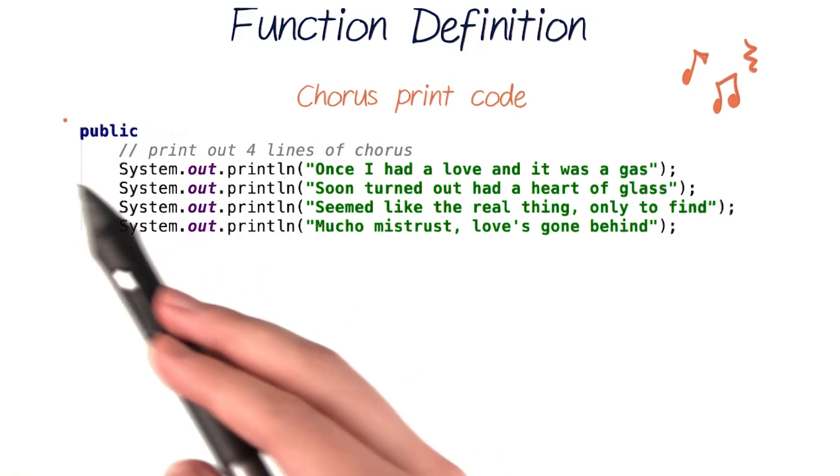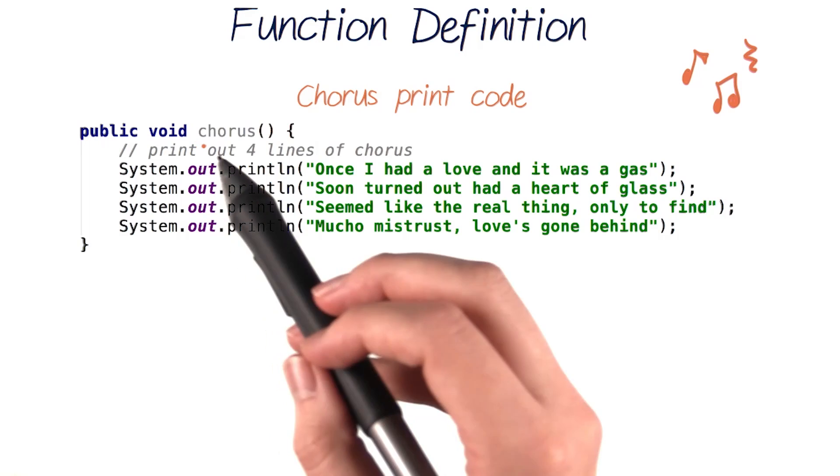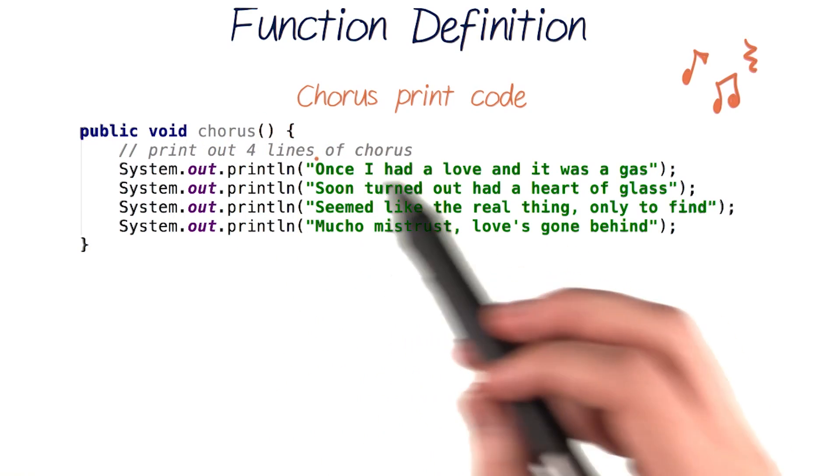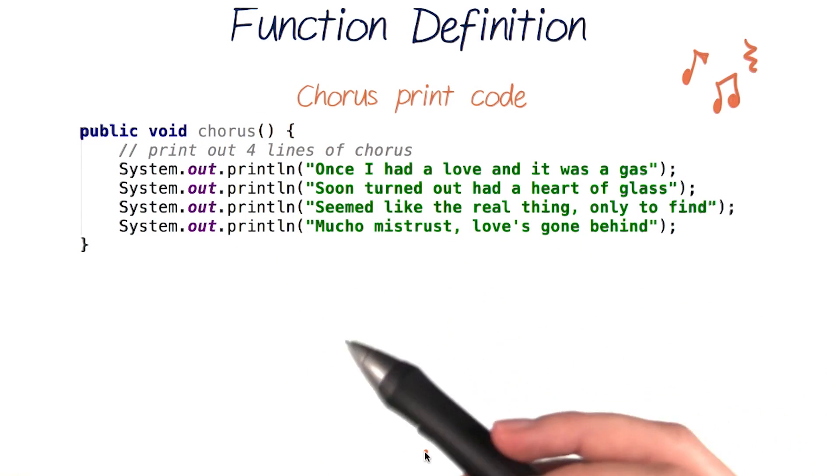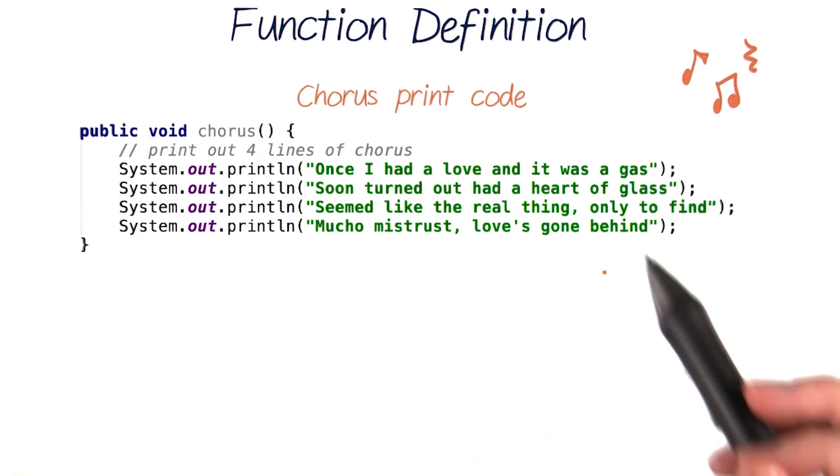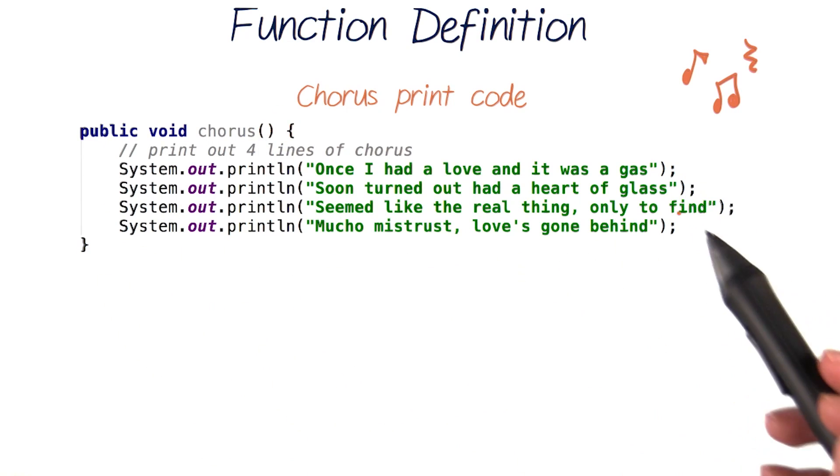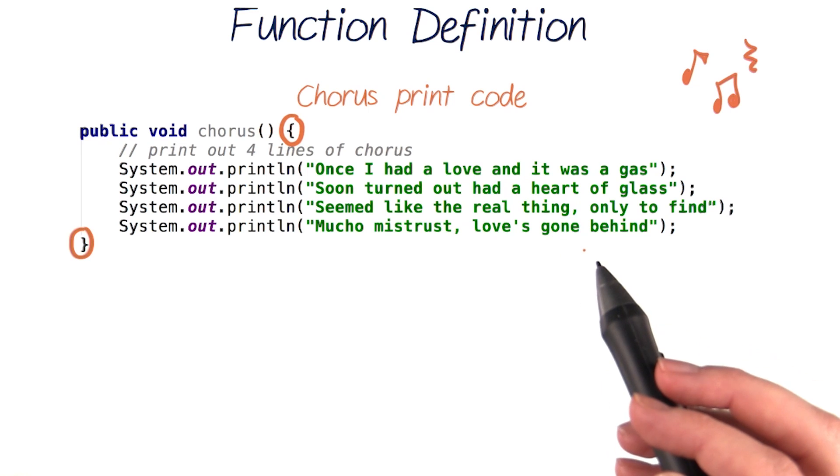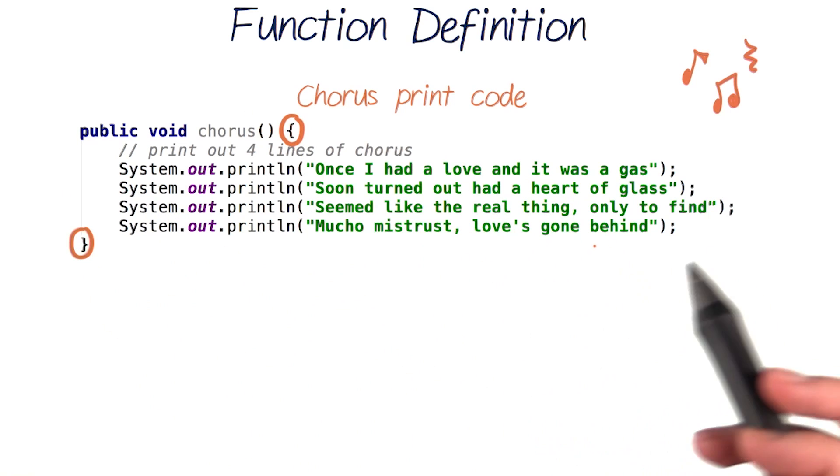We'll write the words public, void, and then the name of our function. The name of a function can be anything, and we'll call this one chorus with empty parentheses. Finally, we'll surround the code we want to execute, these four print lines, in curly braces. And this completes our function definition for chorus.